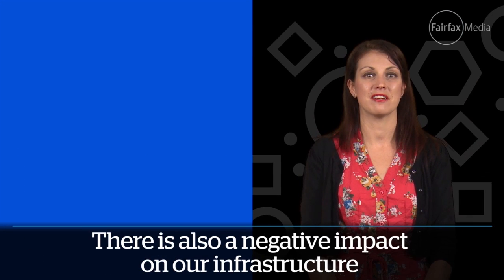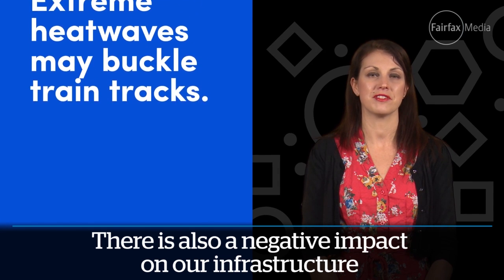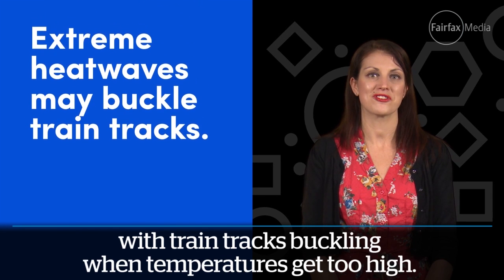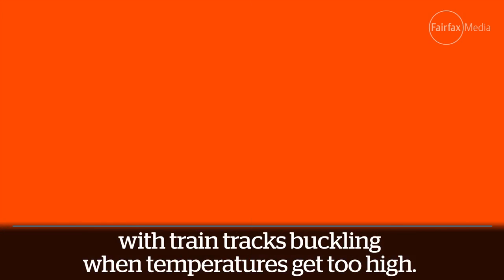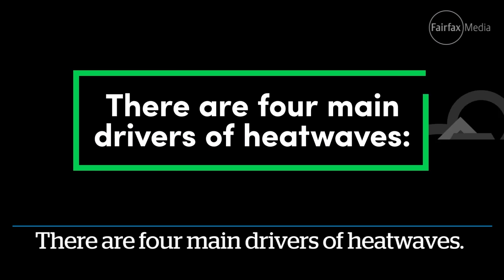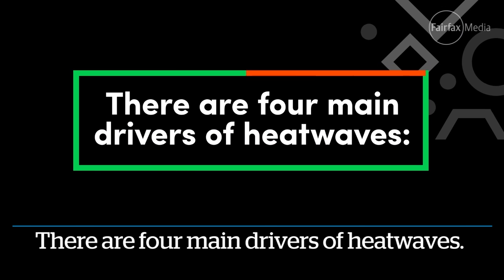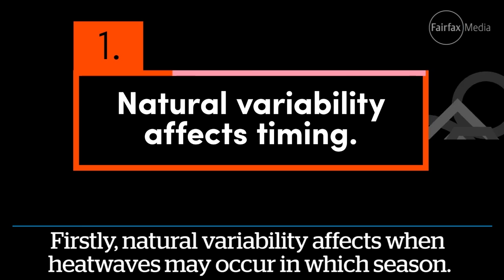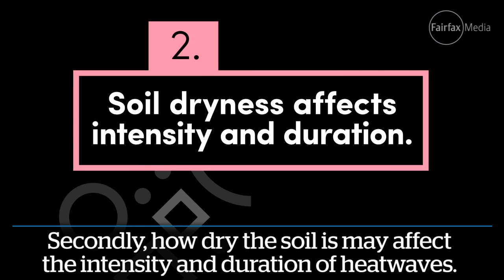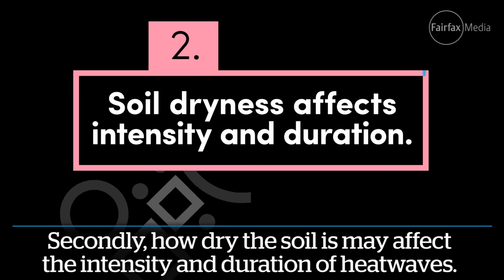There is also a negative impact on our infrastructure, with train tracks buckling when temperatures get too high. There are four main drivers of heat waves. Firstly, natural variability affects when heat waves may occur and in which season. Secondly, how dry the soil is may affect the intensity and duration of heat waves.